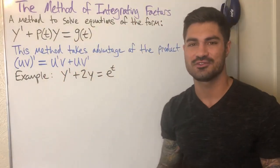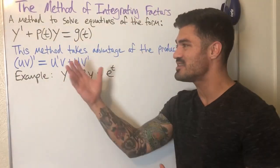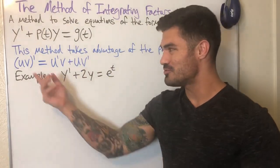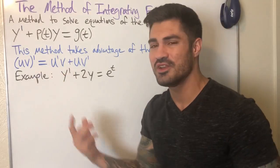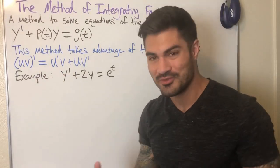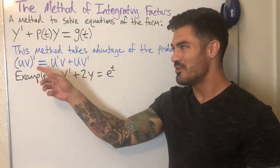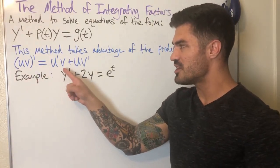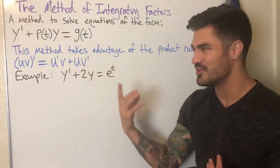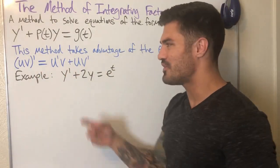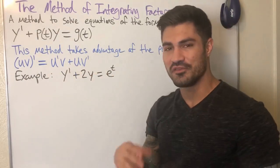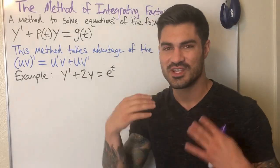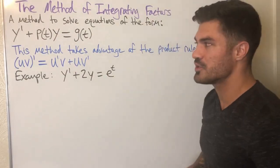This method takes advantage of the product rule, hopefully familiar from calculus. The product rule is used to take the derivative of the product of two functions. If we have two functions u and v, the derivative equals u prime times v plus u times v prime. The way I remember it: derivative of the first times the second, plus derivative of the second times the first.